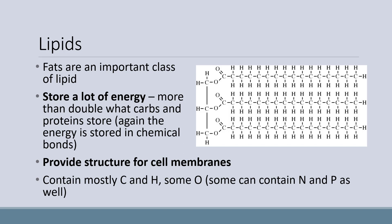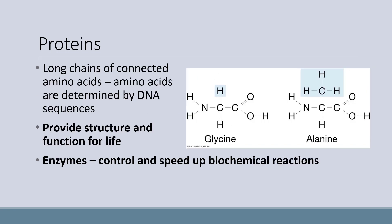Now let's talk about lipids. Fats are an important class of lipid. They store a lot of energy — more than double what carbs and proteins store. The energy is stored in chemical bonds. They also provide structure for cell membranes. They contain mostly carbon and hydrogen, some oxygen, and some can contain nitrogen and phosphorus as well.